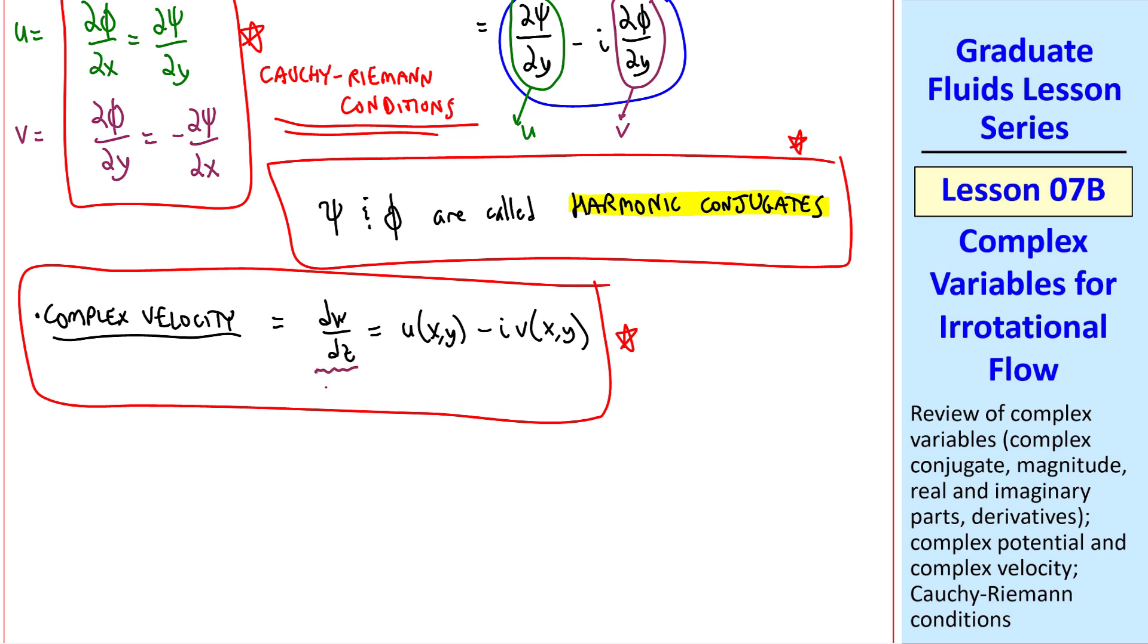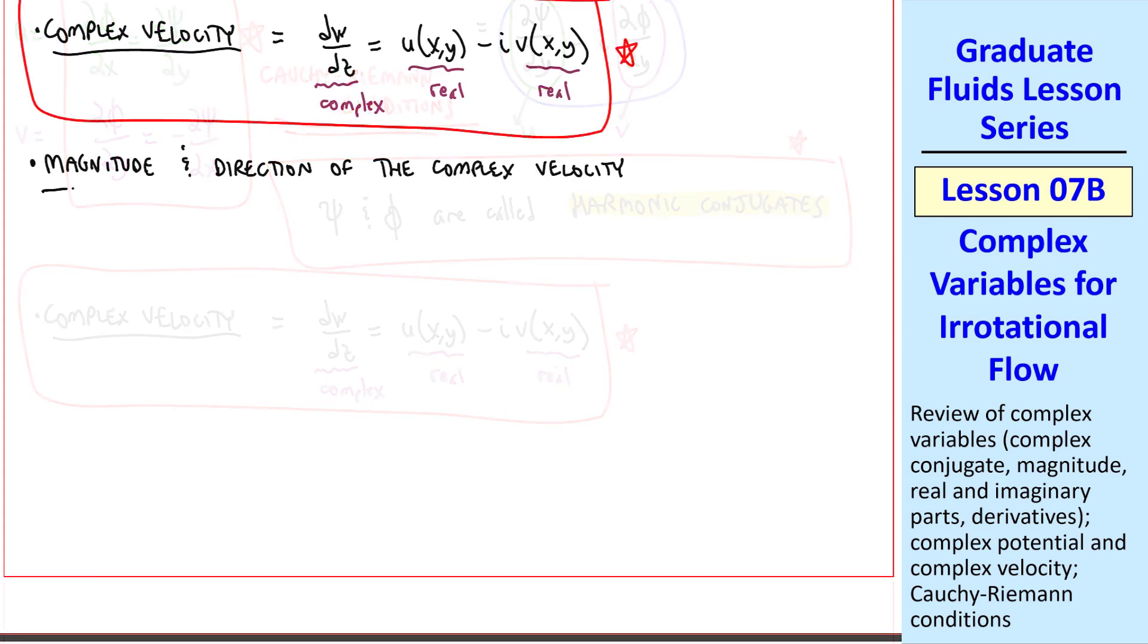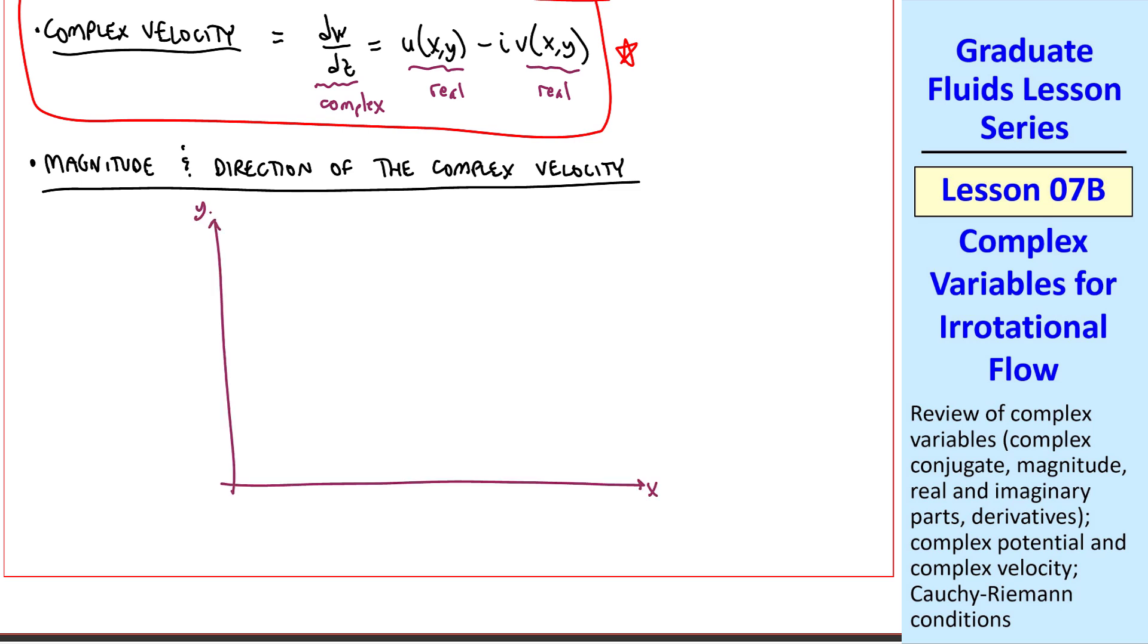Now consider the magnitude and direction of the complex velocity in our xy, or what we'll call the z-plane. Suppose we're at some point z that has a velocity u vector with components u and v with magnitude capital V.